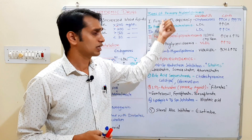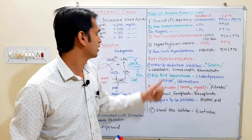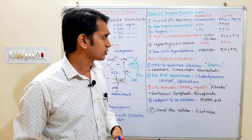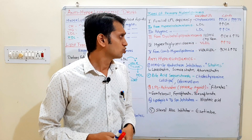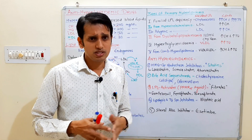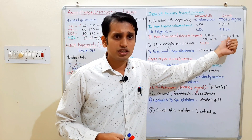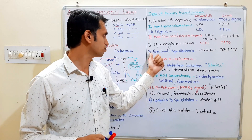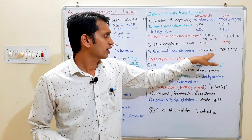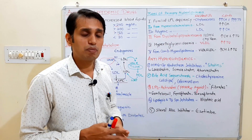Next is familial combined hyperlipidemia, where both your VLDL and LDL are elevated, causing both TG and TC to be increased in your blood. So these are the basic types of primary hyperlipidemia.